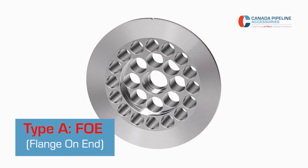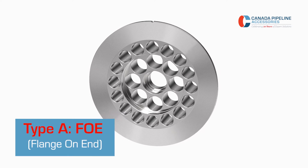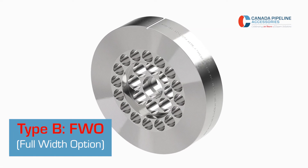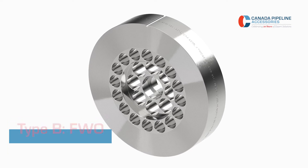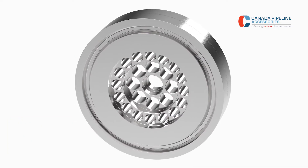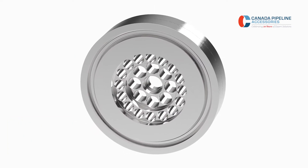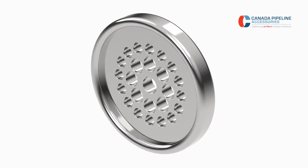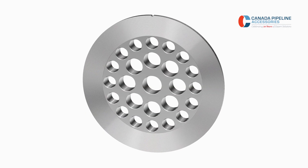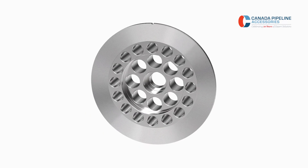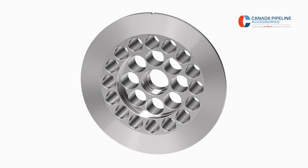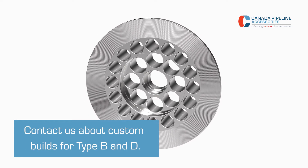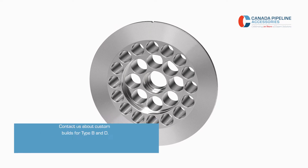The two ANSI Raised Face styles are type A, or flange on end, and type B. For ANSI RTJ, CPA offers the ring type joint female and the male. For ANSI RTJM varieties, CPA also stocks the 50E, 55E, and 65E in the type A style. Type B and D are custom made per the particular job.